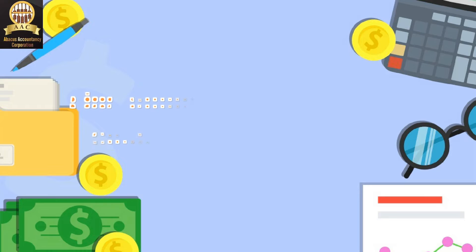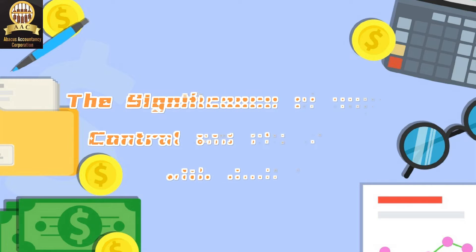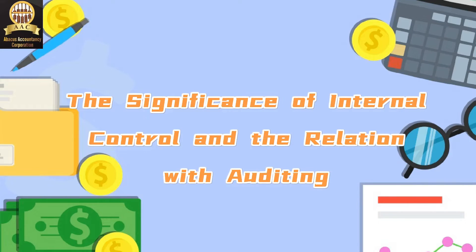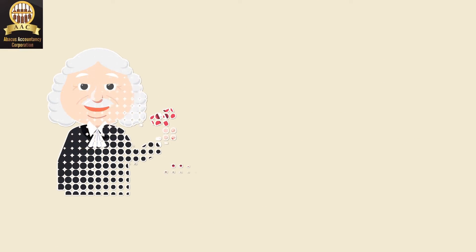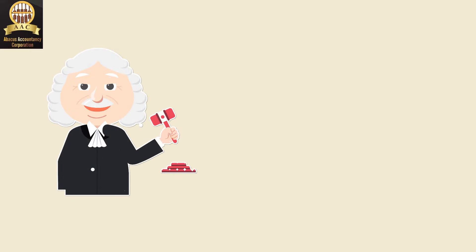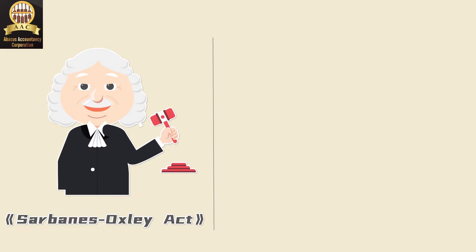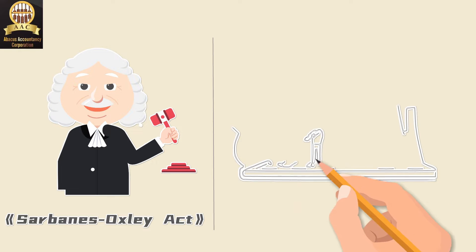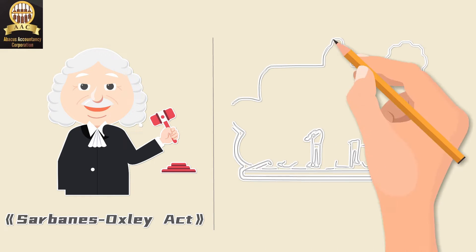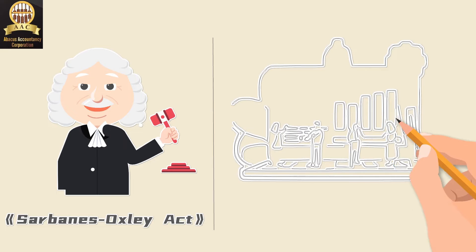The significance of internal control and its relation with auditing. Why does your company need internal control? Let's start with why the Sarbanes-Oxley Act (SOX) was enacted. In 2001, Enron Corporation was found to have committed financial fraud by